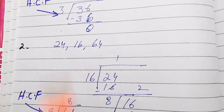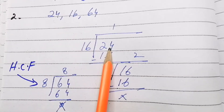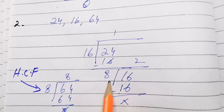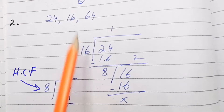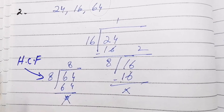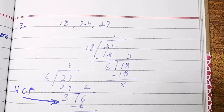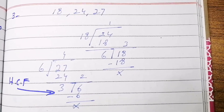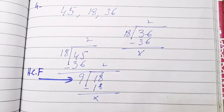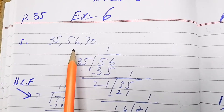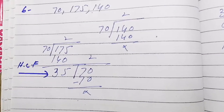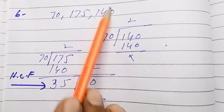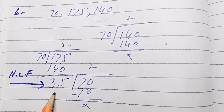For part 2, numbers 24, 16, 64: take any two numbers, one smaller and one bigger. I have taken 24 as the dividend and 16 as the divisor. 16 into 24, remainder 8. Then take 16 as the dividend and 8 as the divisor: 8 into 16, remainder 0. Then take the third number 64 and divide by 8: 8 eights are 64. So HCF is 8. For parts 3 and 4, the same method is applied. For question 5 of Exercise 6, HCF is found by the same method. For question 6, taking two numbers first and then the third, HCF is 35.